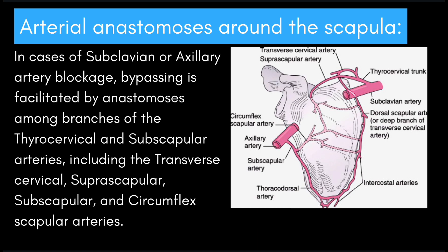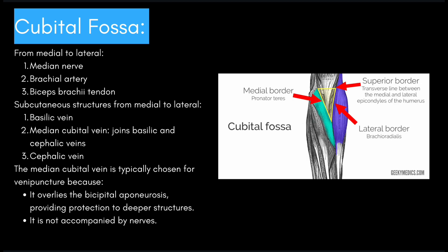Moving on, next we're going to be talking about the cubital fossa. From medial to lateral you have the median nerve, the brachial artery, and the biceps brachii tendon. The subcutaneous structures from medial to lateral include the basilic vein, the median cubital vein which joins the basilic and cephalic veins, and then the cephalic vein. The median cubital vein is typically chosen for venipuncture because it overlies the bicipital aponeurosis, which provides protection to deeper structures and is not accompanied by nerves. I have an illustration of the cubital fossa courtesy of Geeky Medics.